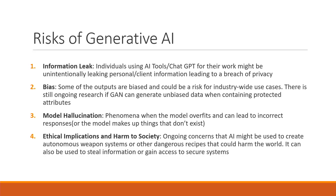Bringing all the risks under one umbrella: we spoke about model hallucination, but information leak is another risk. You may have been following the news about what happened with Samsung — companies are deliberately blocking GPT because it poses a risk of leaking customer data, specifically PII. We all want our customer data to be secure. In fact, Morgan Stanley has blocked it on my laptop, so I can't use ChatGPT at work anymore. That is one way to combat it.